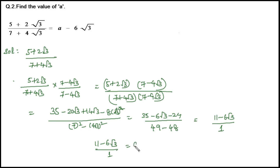This equals A − 6√3. Comparing the left-hand side with the right-hand side, the value of A is 11. Therefore, A = 11.